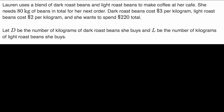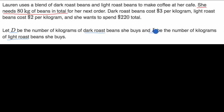Now let's do it together. D is dark roast beans and L is the number of kilograms of light roast beans. They tell us she needs 80 kilograms of beans in total. So what we can say is: the number of kilograms of dark roast beans plus the number of kilograms of light roast beans needs to be equal to 80 kilograms.